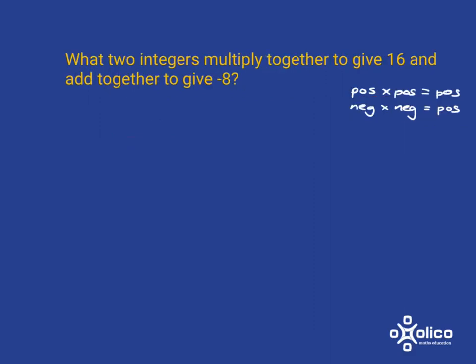Let's look at another example. Here the numbers multiply together to give 16 and add together to give negative 8. Because the product is positive, we again have either a positive times a positive or a negative times a negative. But since they must add to give negative 8, there's no way two positive numbers can sum to negative 8, so both numbers must be negative.